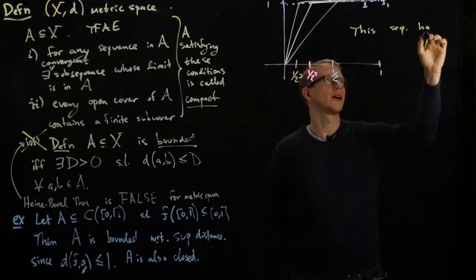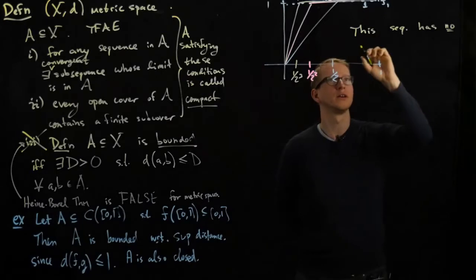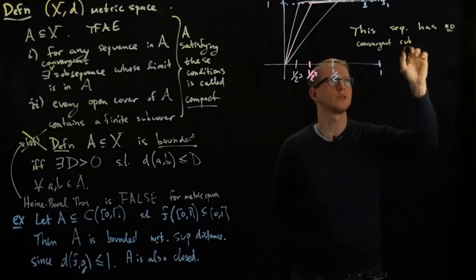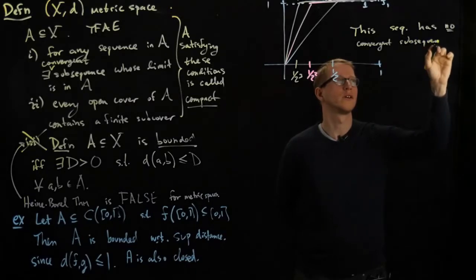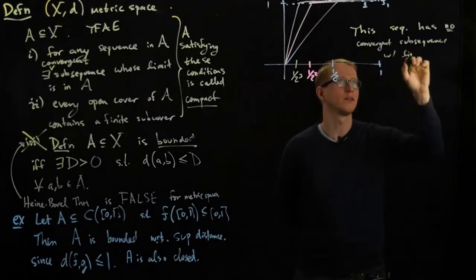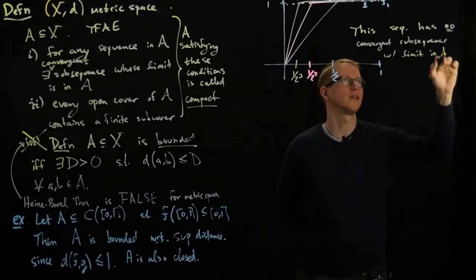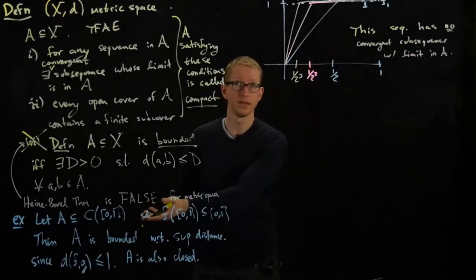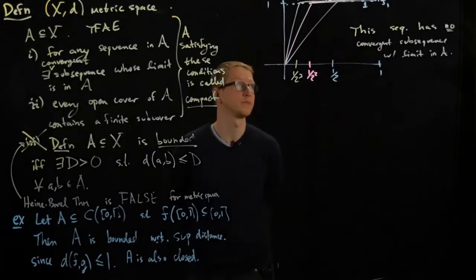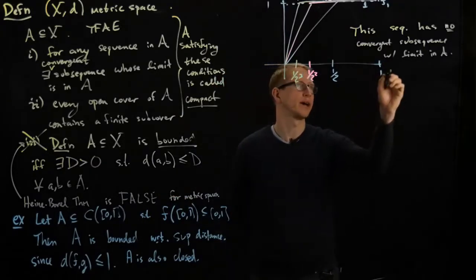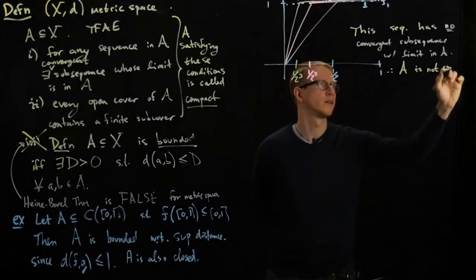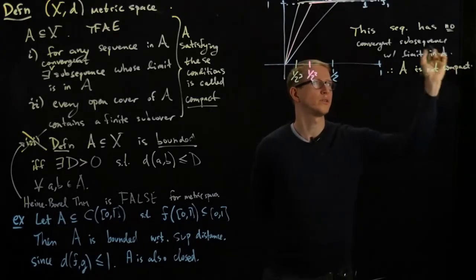But this sequence has no convergent subsequence with limit in A. And in fact it doesn't even have a convergent subsequence with limit in the set of continuous functions, and therefore A is not compact, even though it's closed and bounded.